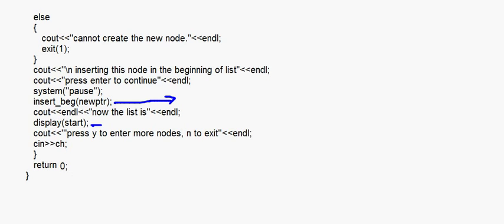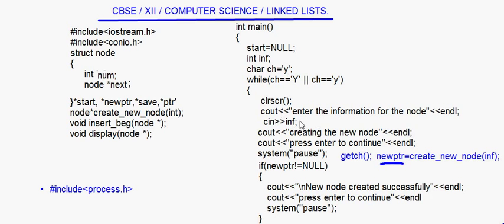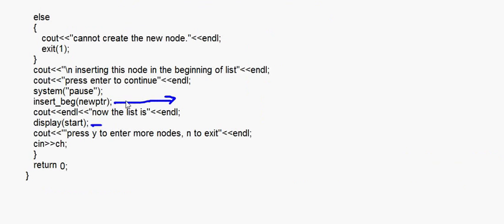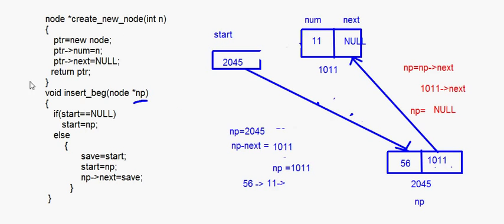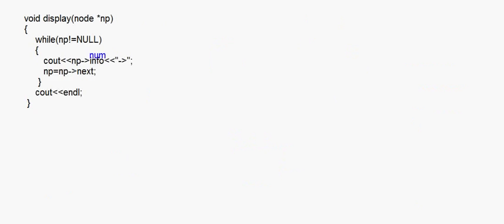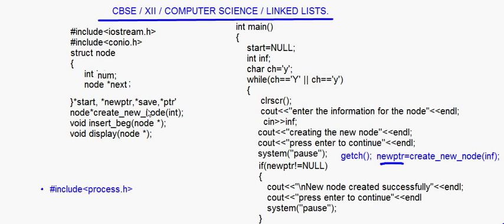Then we go back to the program — press Y to enter more nodes, N to exit. If the user enters Y, a new node is created: enter the information, create the node, insert it, then display. This is how insertion of a new node in the beginning works. You need to learn these methods: creation of a new node, insertion of a new node, and display. The structure should be clear, and the return types and prototypes of all functions should be clear. createNewNode returns a node pointer; the other two functions take a node pointer as a parameter.